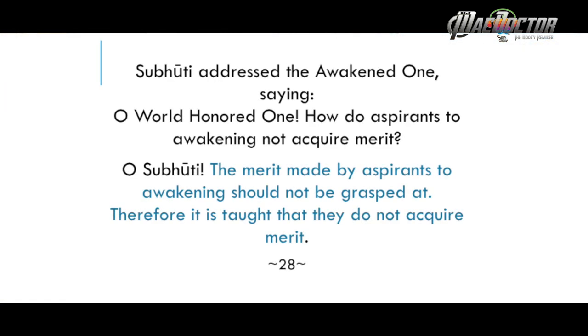Let's read the next part together: 'Subhuti addressed the awakened one saying, O World Honored One, how do aspirants to awakening not acquire merit? Subhuti, the merit made by aspirants to awakening should not be grasped at. Therefore, it is taught that they do not acquire merit.' Here, we are negating the idea that things should not be grasped at. The Buddha is clearly trying to break through attachment to merit.